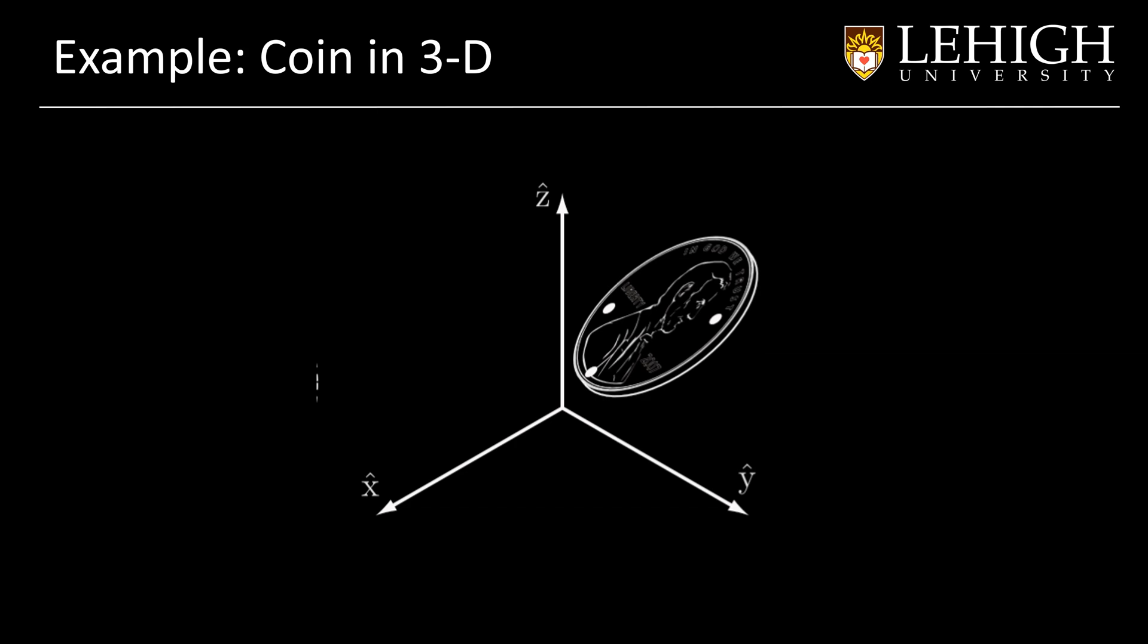A coin in the 3D space is a more challenging case. Now we need more variables to represent that coin. Not only the additional third coordinate in the Euclidean space, but we also need to add two variables for the orientation of the coin. Now we need to know the roll of the coin, the pitch of the coin, and the yaw, and additionally the three coordinates X, Y, Z.